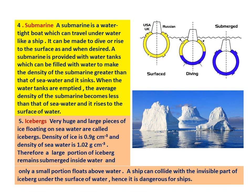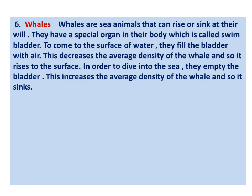Application five — icebergs: very large pieces of ice floating on sea water are called icebergs. The density of ice is 0.9 grams per centimeter cube and the density of sea water is 1.02 grams per centimeter cube. Therefore, a large portion of an iceberg remains submerged inside water and only a small portion floats above. A ship can collide with the invisible submerged part of an iceberg, making icebergs dangerous for ships.